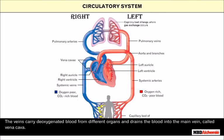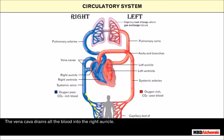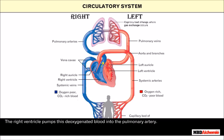The veins carry deoxygenated blood from different organs and drain the blood into the main vein called vena cava. The vena cava drains all the blood into the right auricle. The right auricle contracts and pushes this blood into the right ventricle. The right ventricle pumps this deoxygenated blood into the pulmonary artery, which carries this blood to the lungs where it gets oxygenated.